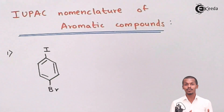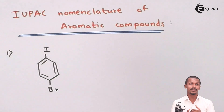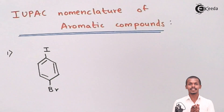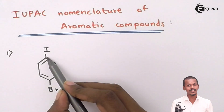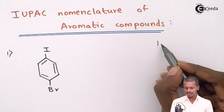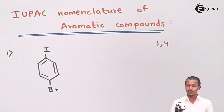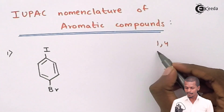This is the first structure for which we have to give the IUPAC nomenclature. This is a di-substituted benzene, and we need to determine from where the numbering should start. The numbering should be done such that it follows alphabetical order. If I consider this as carbon number 1, this would be carbon number 2, 3 and 4, giving a combination of 1,4.